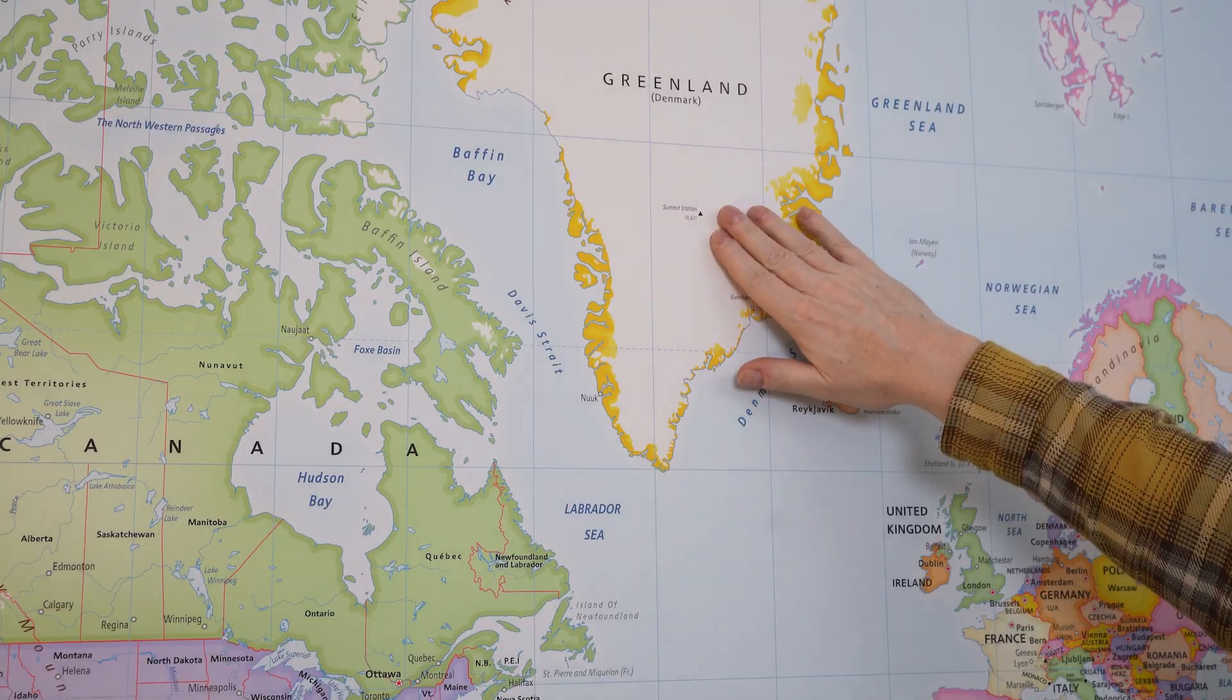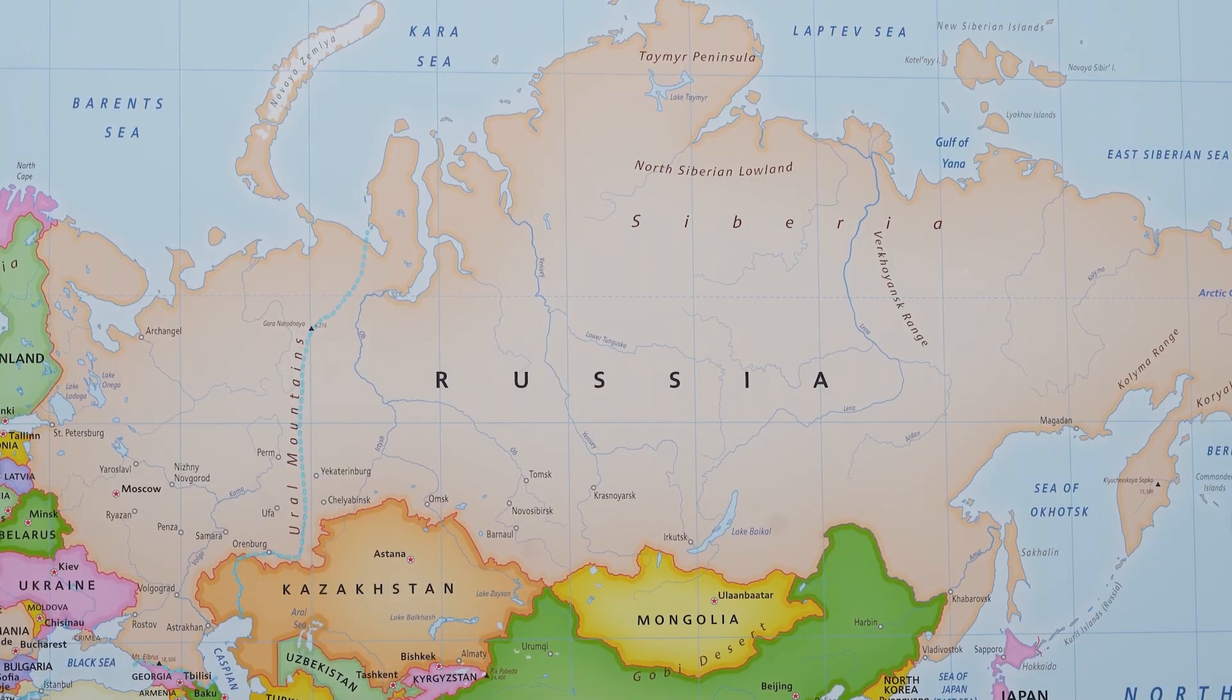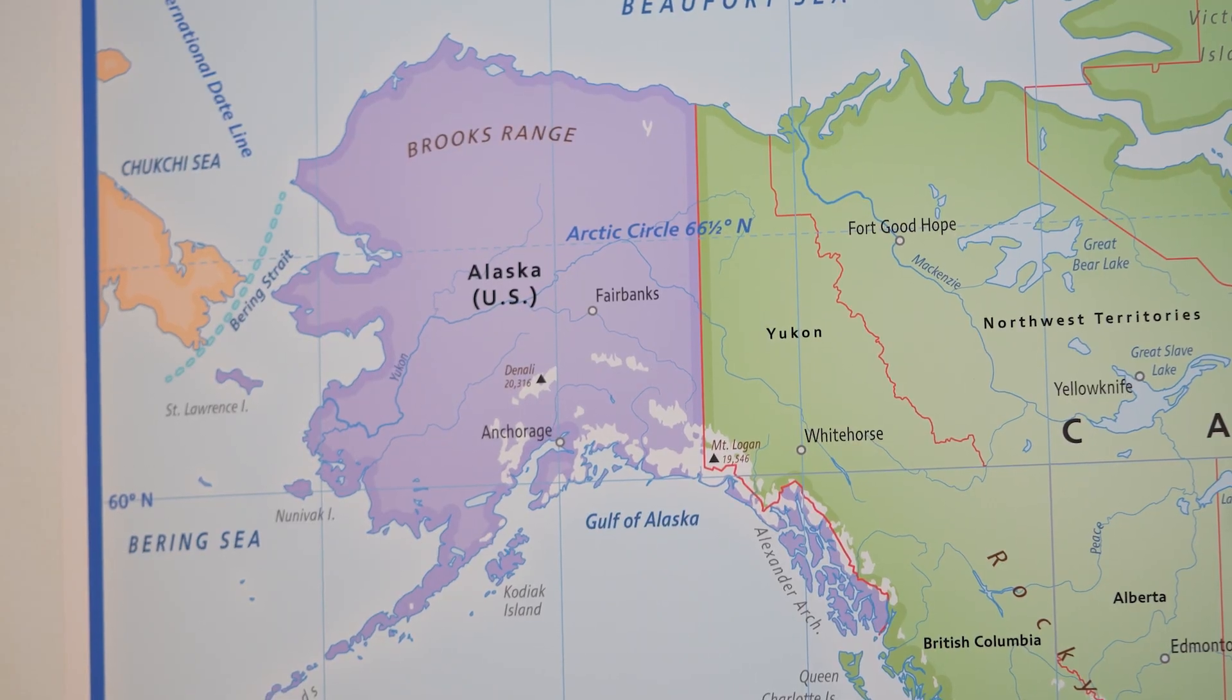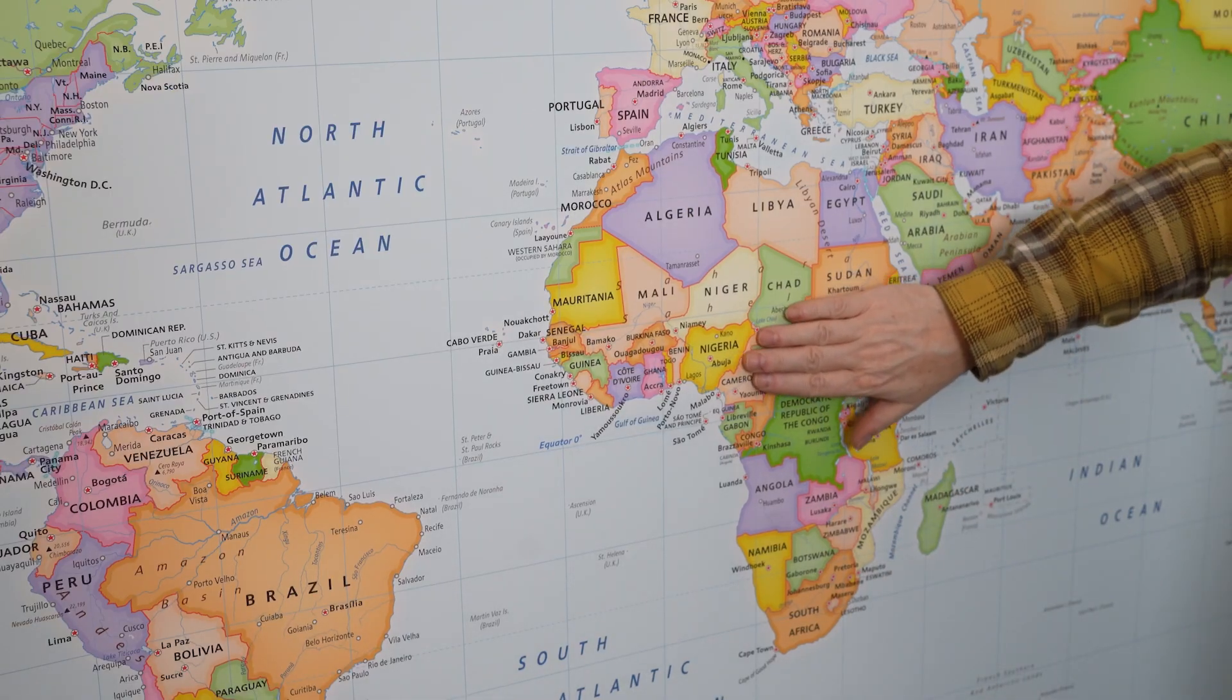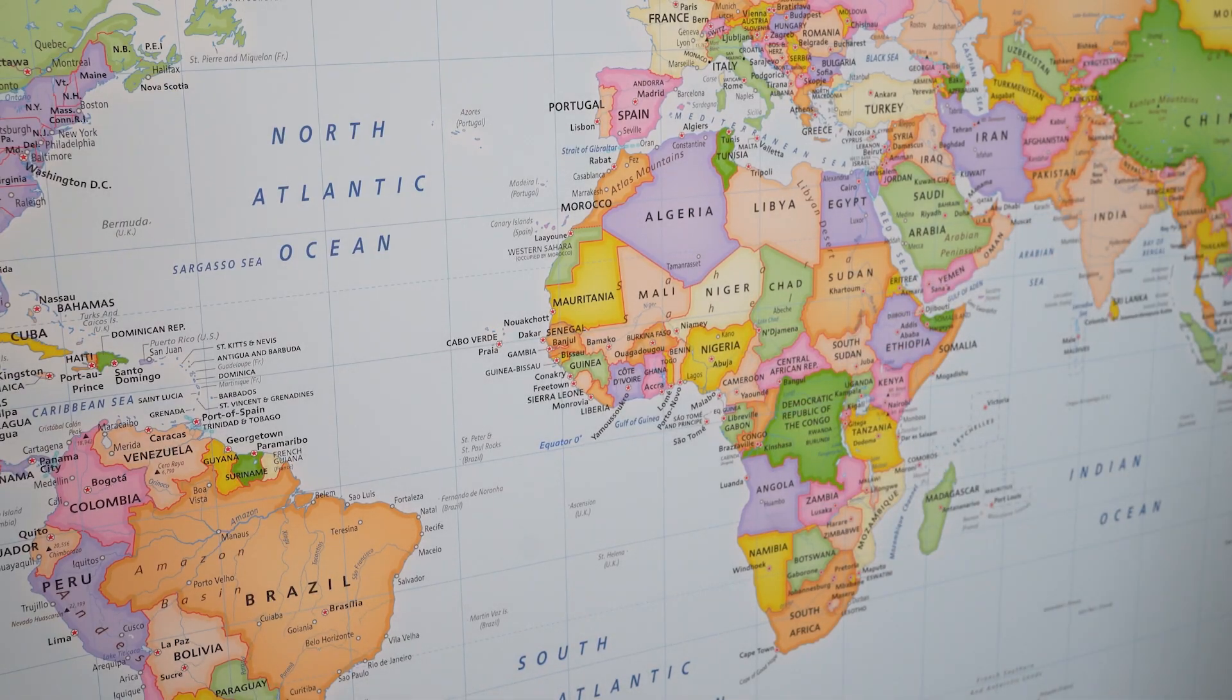Greenland looks massive. Russia also is enormous. Alaska and Canada are ominous giant land masses. In Africa, it looks fine. Normal sized.